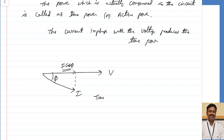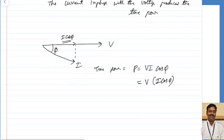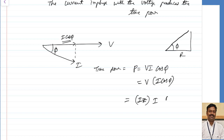As derived previously, the true power P = V·I·cos φ. I can write this as V·I·cos φ — the component of current in the direction of voltage. Since V = I·Z, this becomes I·Z·I·cos φ. Using the impedance triangle, cos φ = R/Z, so this becomes I²·R. We can conclude that whatever power loss exists happens only because of the resistance; the inductor never contributes to any power loss.